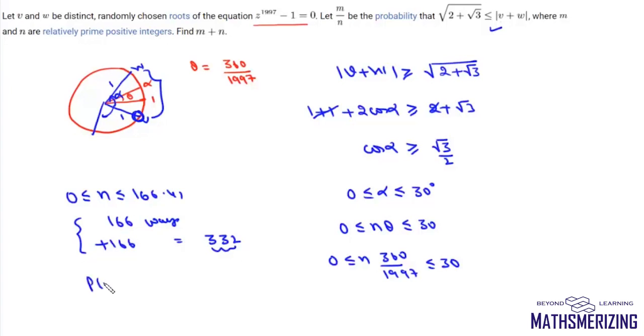So the required probability will be 332 divided by—now how many total choices do we have? There are 1997 roots, out of which 1 is v, so the remaining ones are 1996. So the required probability is 332 upon 1996, which is simply 83 by 499, and that is the answer to this question.